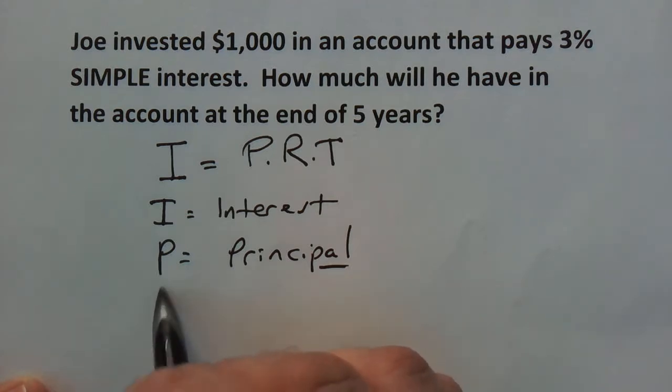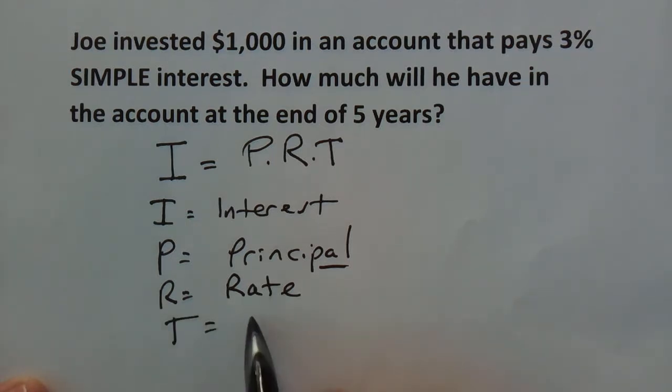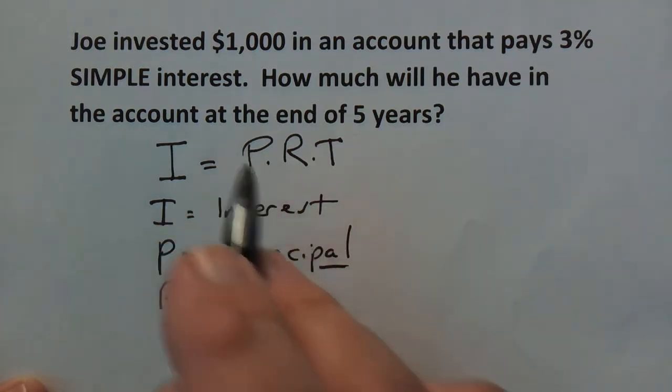The R is equal to the rate, in other words the interest rate, and the T is equal to time. How much time is the money at work? So we're going to gather the information from each of these and then we're going to apply it into our formula.